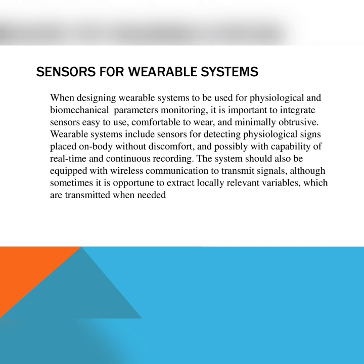A generic wearable system can be structured as a stack of different layers: a lower one, a middle one, and a higher one. The lower layer is represented by the body, where the skin is the first interface with the sensor layer. This layer is composed of three sub-layers: garments and sensors, conditioning and filtering of signals, and local processing. The processing layer collects the different sensor signals, extracts specific features, and classifies the signal to provide high-level outcomes for the application layer. The application layer can provide feedback to the user according to the specific application and the user's needs.